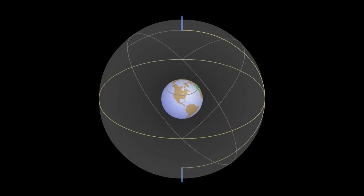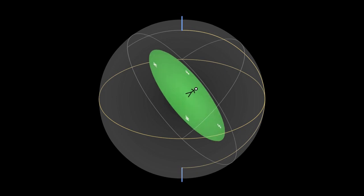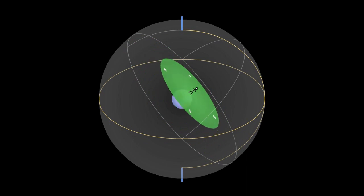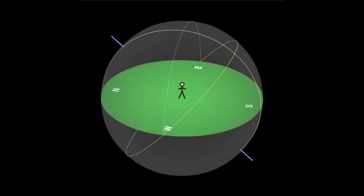So, the local horizon view shows us the view that a woman standing at the white dot sees around herself. You can see the woman as a stick figure in the middle. The green plane is the local horizon plane. You can see the north, south, east and west marked on the local horizon. The boundary of the green plane is the horizon that the woman sees. Note, in particular, the eastern and the western horizon.